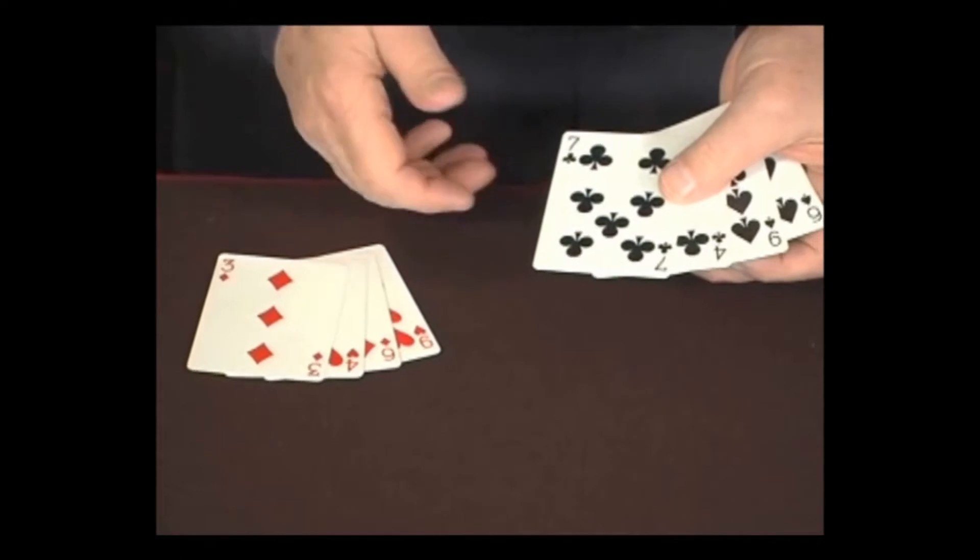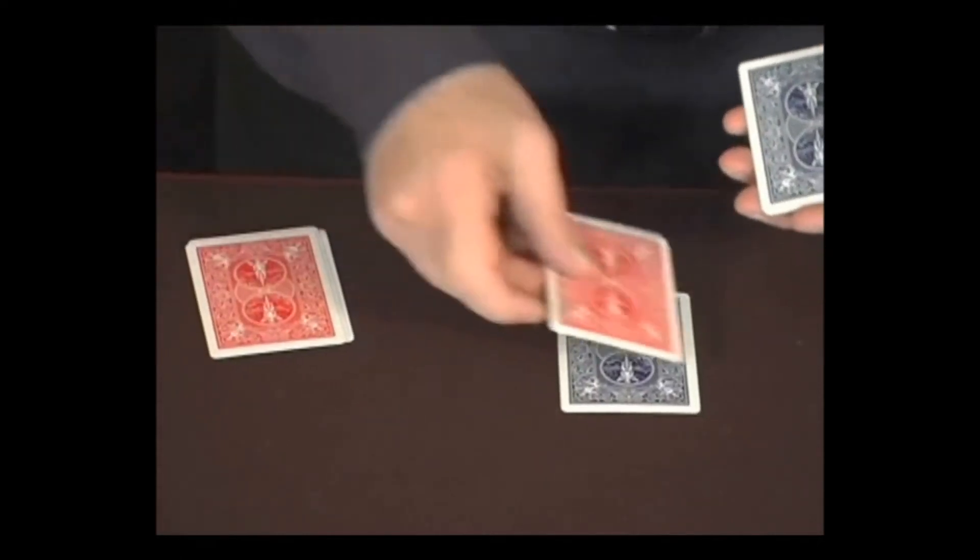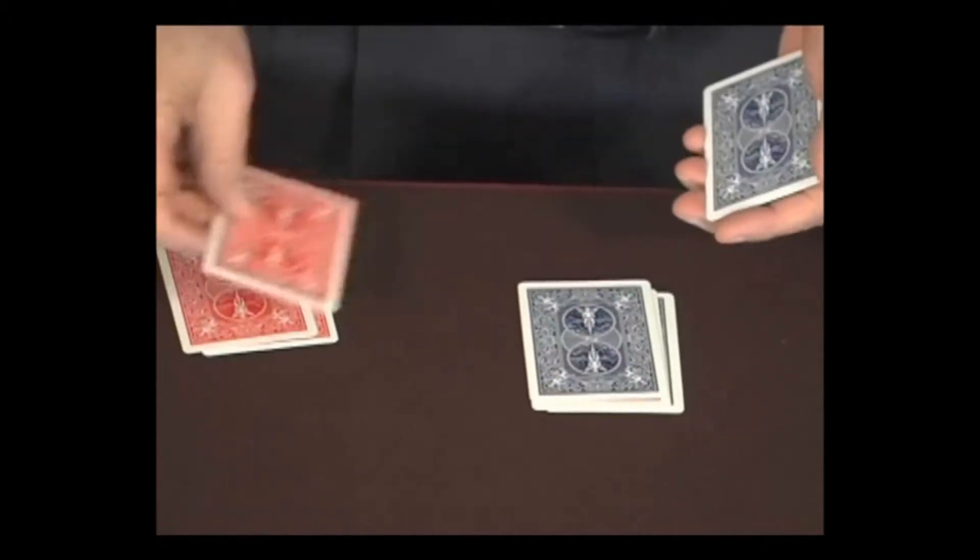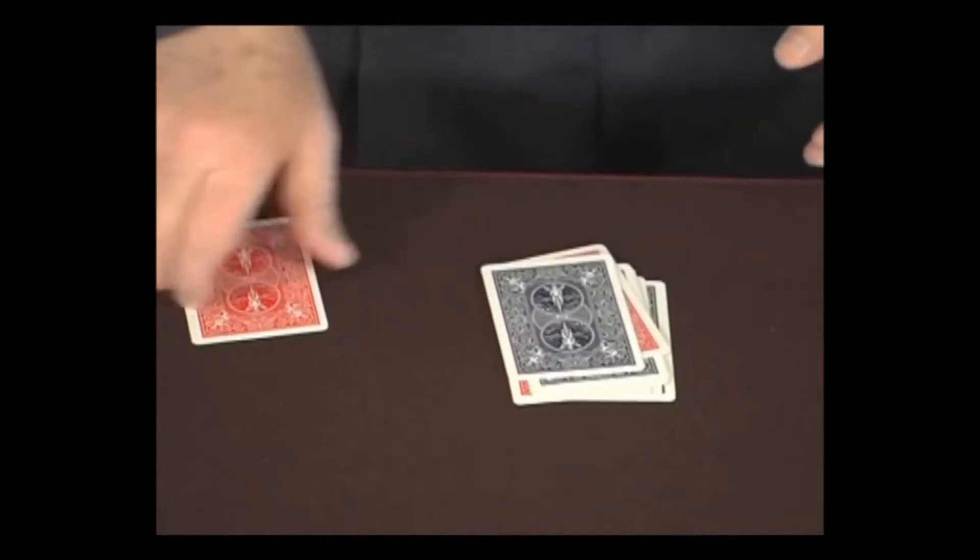Now, what we're going to do is I'm going to mix them. I'm going to take a blue one, and a red one, and a blue one, and a red one, a blue one, and a red one, a blue one, and a red one.